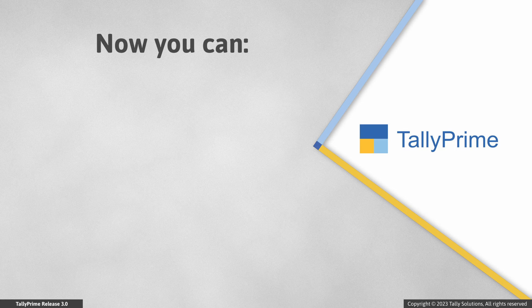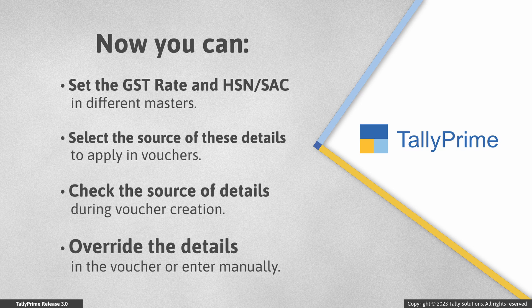With the new experience, you can set the GST Rate and HSN or SAC details in different types of masters. You can select the source of these details to apply in vouchers, check the source of details during voucher creation, and overwrite the details in the voucher by selecting a different source or by entering them manually.